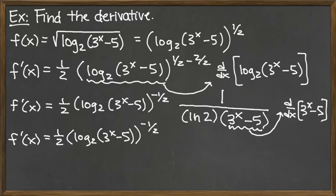And then we've got this factor here, where we have the natural log of 2 on the bottom and the 3 to the x minus 5 on the bottom, all over 1. And then we've got to pull out the derivative here of 3 to the x minus 5.